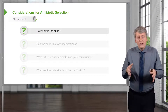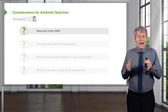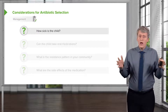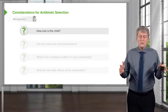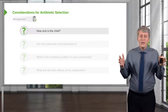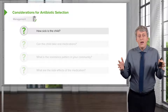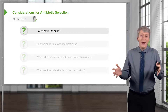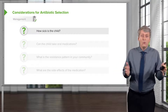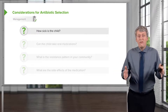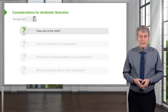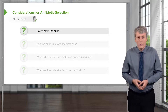If the child is in the ICU and in sepsis, we're going to start with a broad-spectrum agent because we don't have the time or the ability to wait and allow this child to get worse if, in fact, this is the unlikely case of a resistant organism.